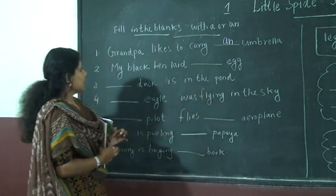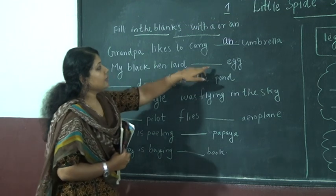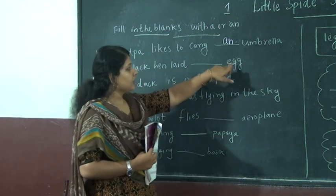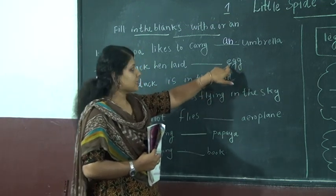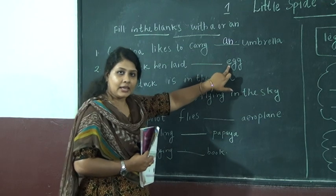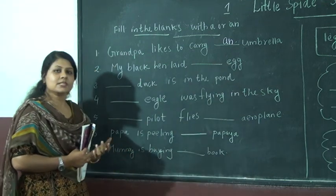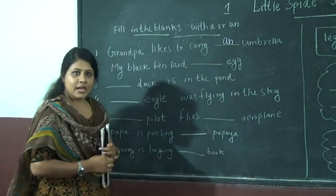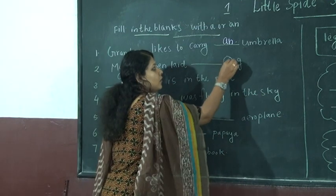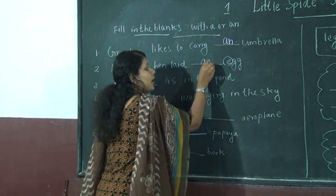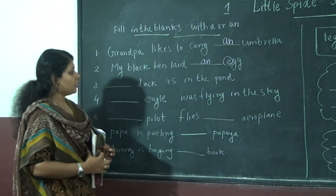Next one: My black and white dash egg. The word is egg. The first letter is E. E is a vowel, so AN is the right one. AN egg.